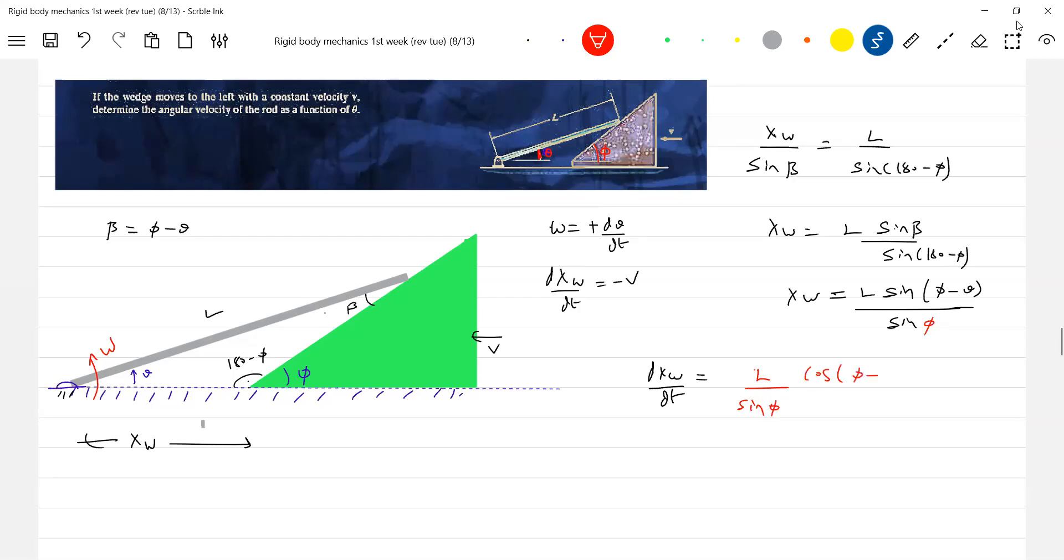Cosine of (phi minus theta) times minus d(theta)/dt. dx_w/dt is minus v. Negative sign will cancel out, so therefore this omega equals l sine phi divided by...